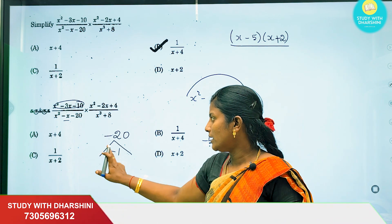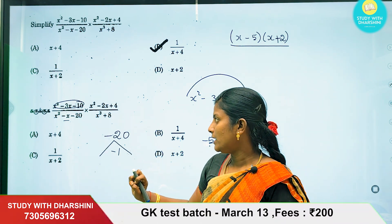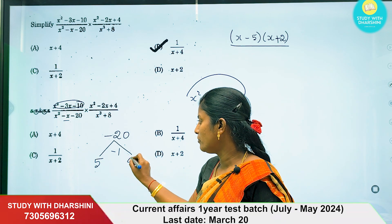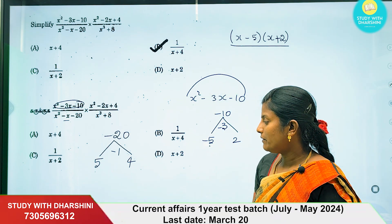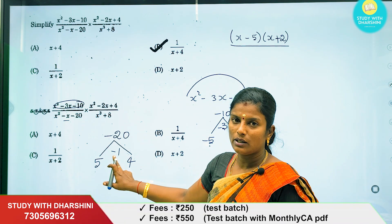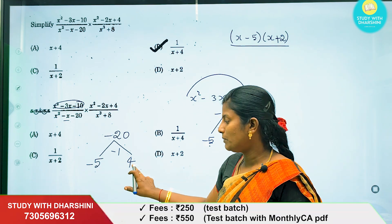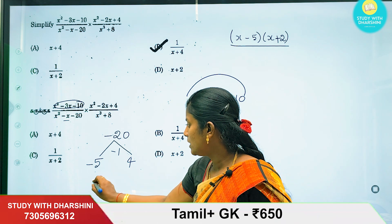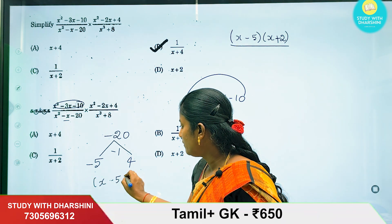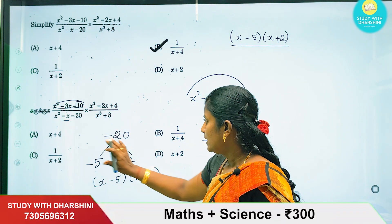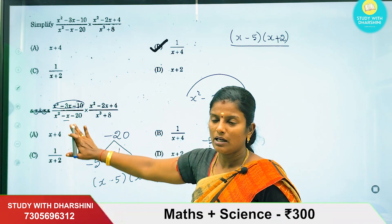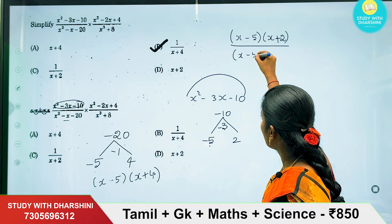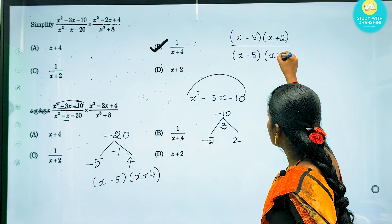If we choose two numbers where the middle is minus 1 and the product is minus 20, we use 5 and 4 since 5 times 4 equals 20. With the negative sign, minus 5 plus 4 equals minus 1. So the denominator x squared minus x minus 20 factors as (x minus 5)(x plus 4).